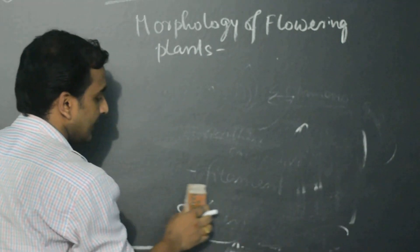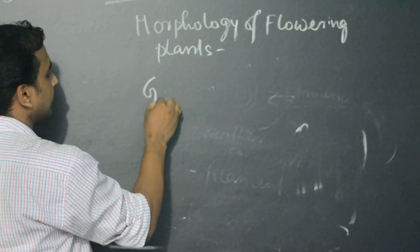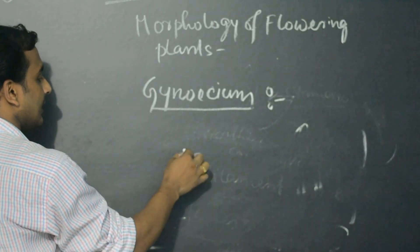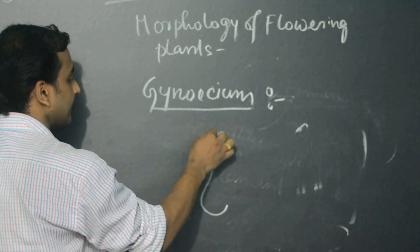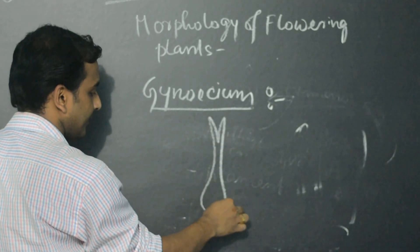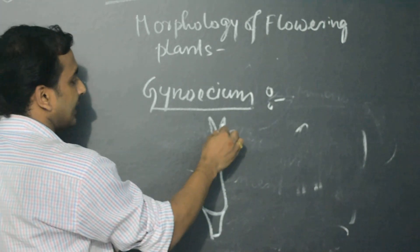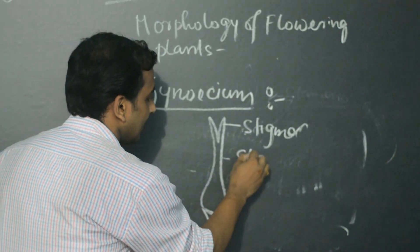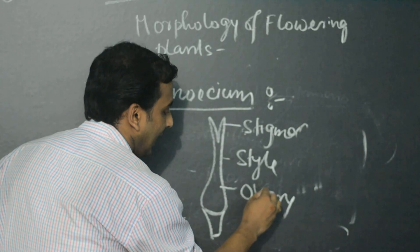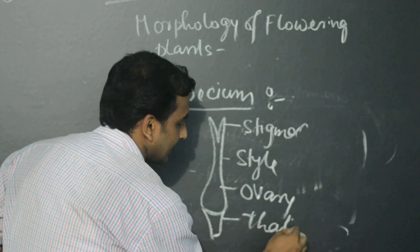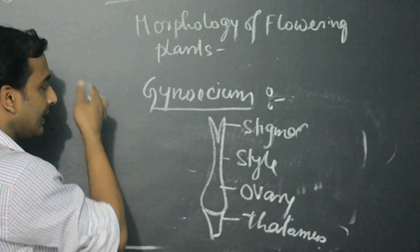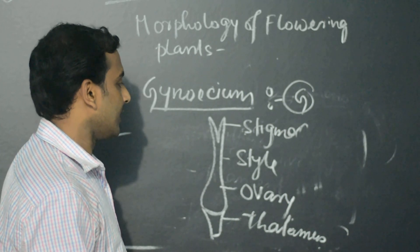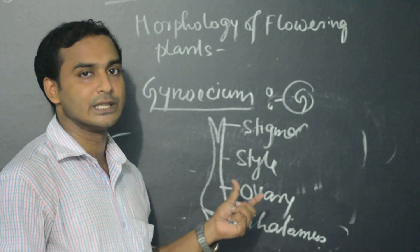The next portion is Gynoecium, the female reproductive part of a flower. Gynoecium consists of stigma, style, and ovary, along with a thalamus. Its symbol is G. I hope the concept of Gynoecium is clear and you can solve your problems easily. Thank you.